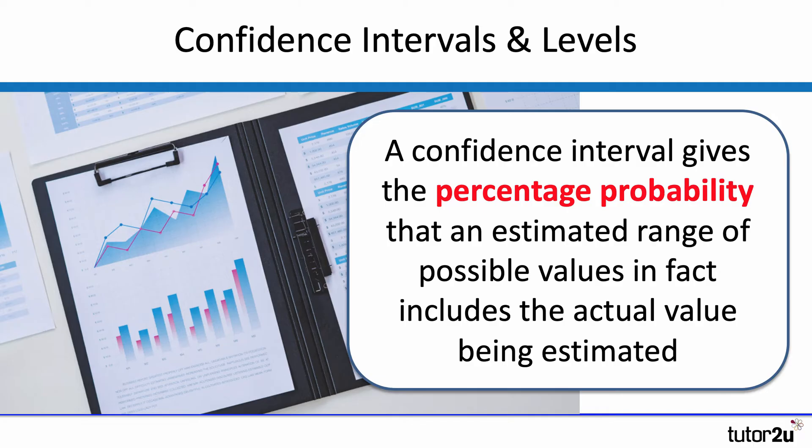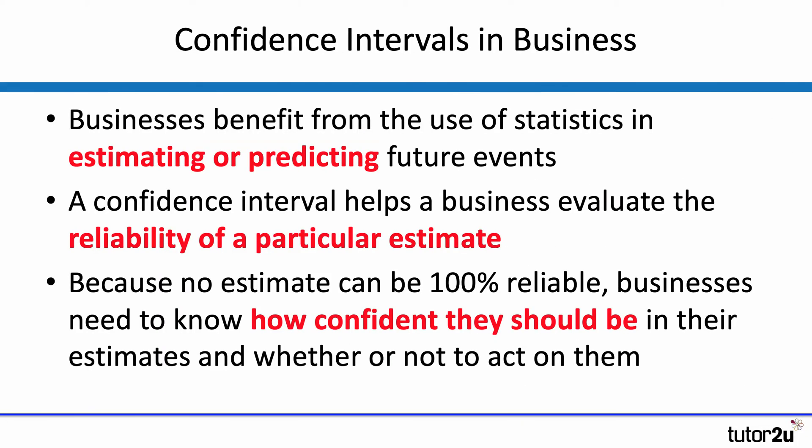Confidence intervals give you the percentage probability that what you're trying to estimate is in fact included in the results of your sample. So you might be 95% confident that the results of your sample or your research are correct. It's important in business because you can't be a hundred percent certain about anything, particularly where you are trying to use sampling to gain some assurance that what you're doing is okay.